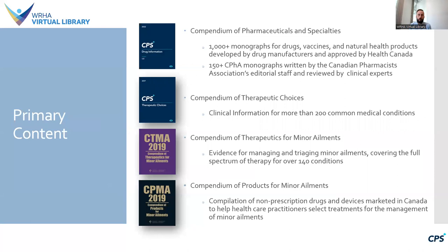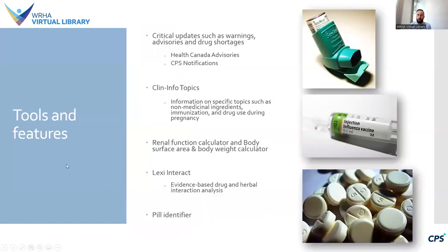Another resource within CPS, the Compendium of Therapeutic Choices, includes clinical information for more than 200 common medical conditions. The Compendium of Therapeutics for Minor Ailments contains evidence for managing and triaging minor ailments, covering over 140 conditions. And lastly, the Compendium of Products for Minor Ailments is a compilation of non-prescription drugs and devices marketed in Canada to help healthcare practitioners select treatments for minor ailments. I'll be showing you all of these in more detail later on.